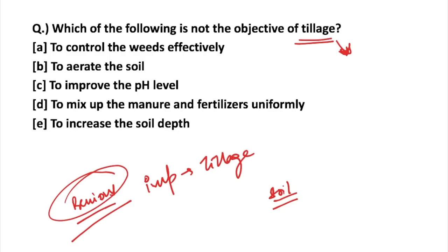The first statement is: to control the weeds effectively. This is correct because when we are making the soil ready, we need to uproot the weeds, so it helps in controlling weeds effectively. Next is to aerate the soil — it becomes easy for air to penetrate the soil, so tillage is required for aeration. Next is to improve the pH level. pH level is a chemical property of the soil which is not directly affected by tillage, but by improving soil fertility we can improve pH level.